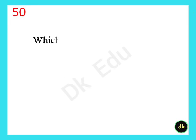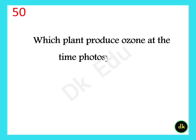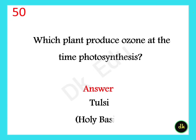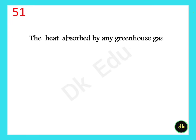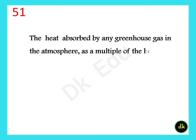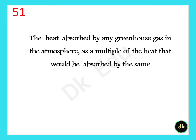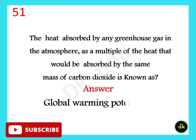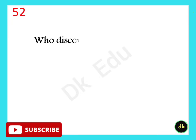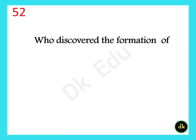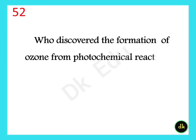Which plant produces ozone during photosynthesis? Holy basil. The heat absorbed by any greenhouse gas in the atmosphere as a multiple of the heat that would be absorbed by the same mass of carbon dioxide is known as Global Warming Potential. Who discovered the formation of ozone from photochemical reactions? Please comment your answer. Thanks for watching.